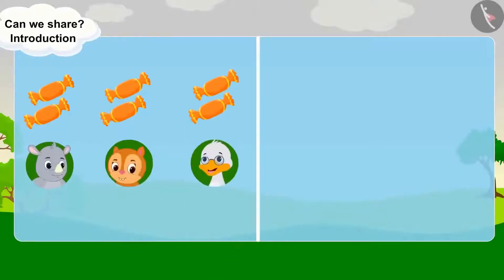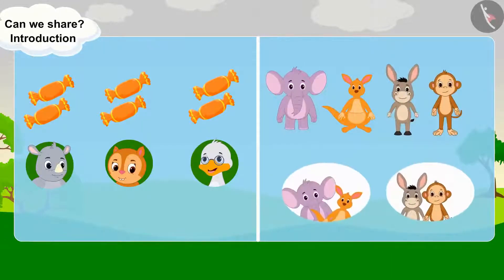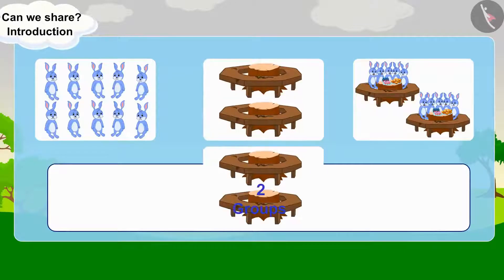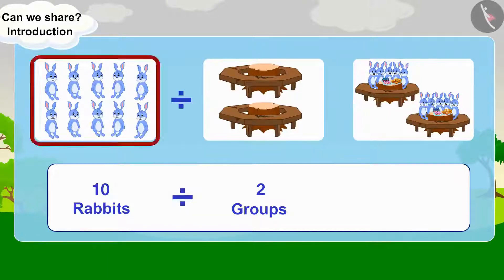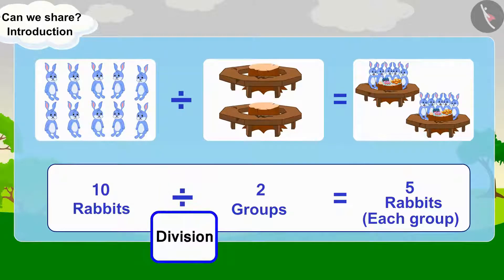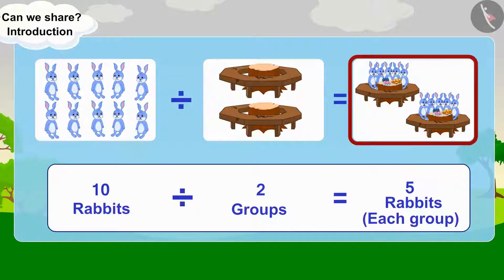Distributing things equally among people or making equal groups of people or things is called division. We are forming two equal groups of ten rabbits — dividing ten rabbits into two equal groups, with five rabbits in each group. This is the total number of things to be divided. This symbol represents division, showing the total number of groups and the total number of things in each group.